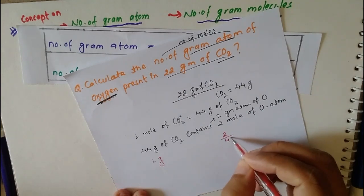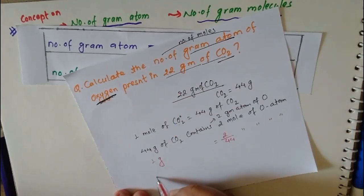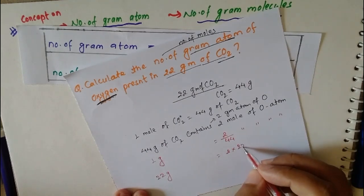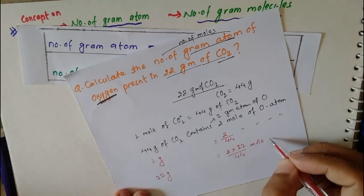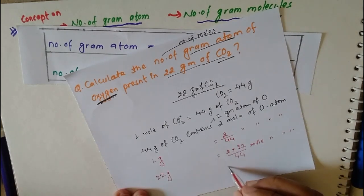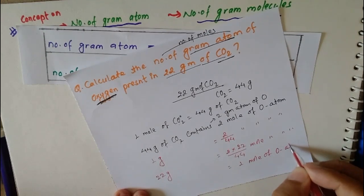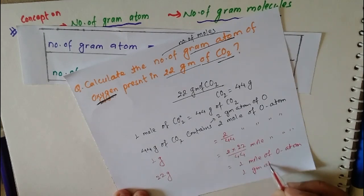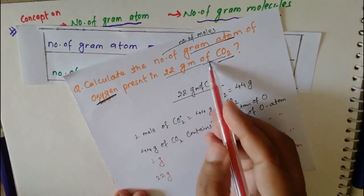We have 44 grams of CO2 containing 2 gram atoms of oxygen. So 1 gram contains 2 divided by 44 moles of oxygen atom. We are given 22 grams, so: 2 × 22 ÷ 44 = 1 mole of oxygen atom. Therefore, 1 gram atom of oxygen is present in 22 grams of CO2.